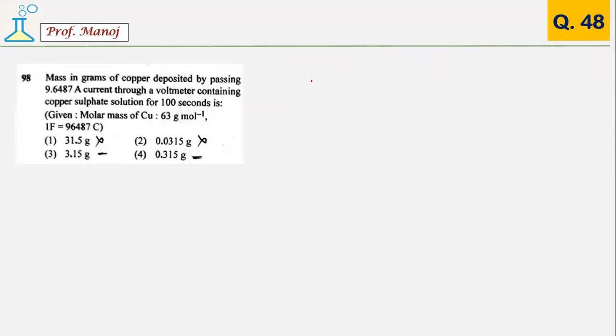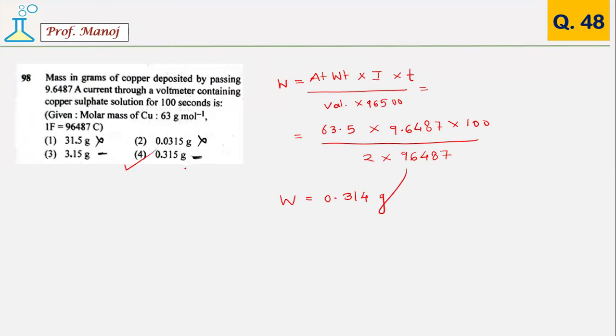Next is based on Faraday's laws, actually a very simple question. You have w equals atomic weight multiplied by i into t upon valency into 96500. Atomic weight given is 63.5 for copper, current given 9.648, 100 seconds, copper's valency is 2, and this is usually 96500 but they have given a very convenient value so that you can do easy calculation. This is the answer, the nearest answer is 0.315.